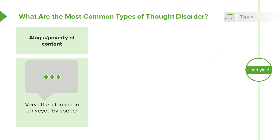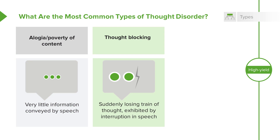When we say a patient has alogia or poverty of content, this is where very little information is conveyed by speech. Thought blocking is when a patient suddenly loses their train of thought, exhibited by an interruption in their speech, and then they have trouble picking right back up again.